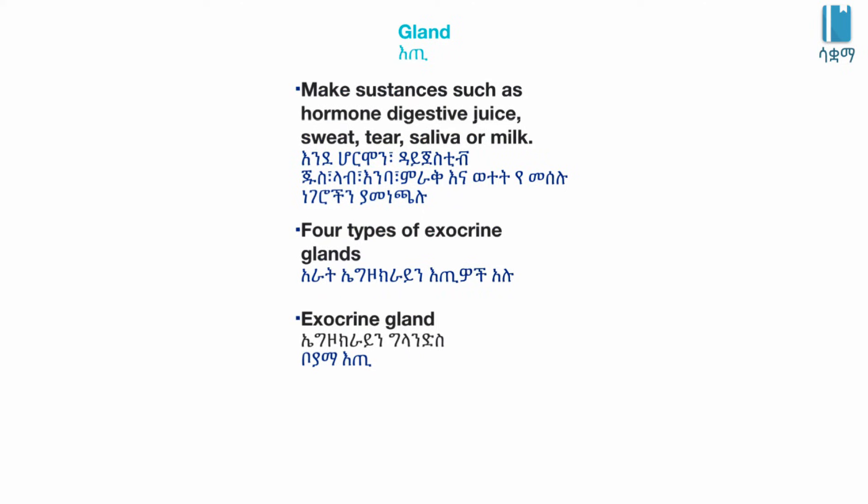Glands make substances such as hormones, digestive juice, sweat, tears, saliva, or milk.